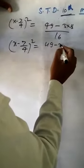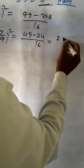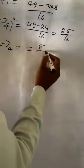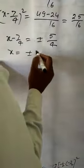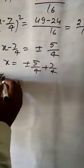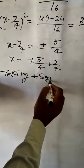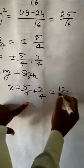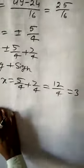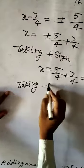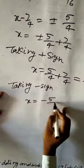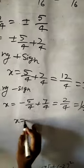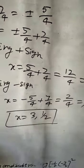X minus 7 upon 4 whole square equal to 49 minus 24 upon 16 equal to 25 upon 16. Taking square root: X minus 7 upon 4 equal to plus or minus 5 upon 4. So X equal to plus or minus 5 upon 4 plus 7 upon 4. Taking plus sign: X equal to 12 upon 4 equal to 3. Taking minus sign: X equal to 2 upon 4 equal to 1 upon 2. Therefore X equal to 3 or 1 upon 2 are the roots of the given equation.